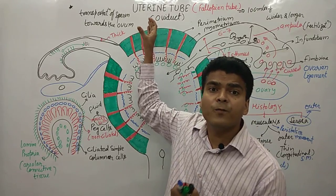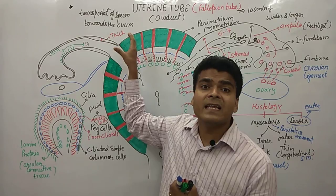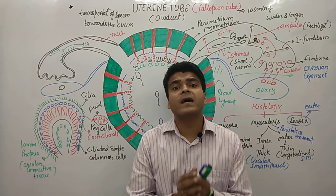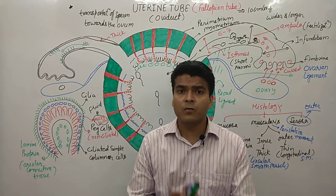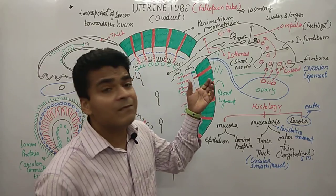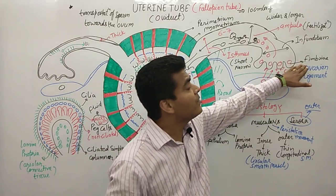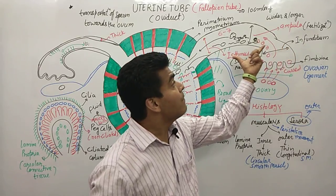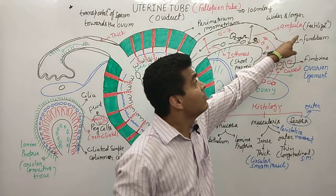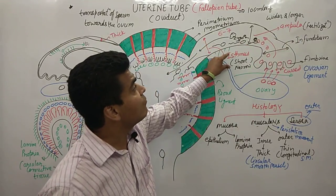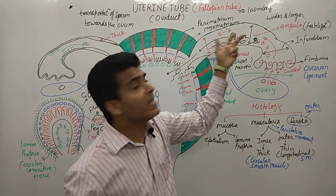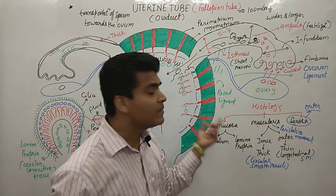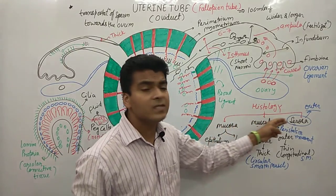To summarize the uterine tube functions: it transports sperm towards the ovum and provides space for fertilization. Parts of the fallopian tube are: fimbriae (finger-like projections), infundibulum (funnel-shaped area), ampulla (wider and longest area where fertilization occurs), and isthmus (narrow and short area). The total length of the fallopian tube is 10 cm. Histologically there are three layers: mucosa, muscularis, and serosa.